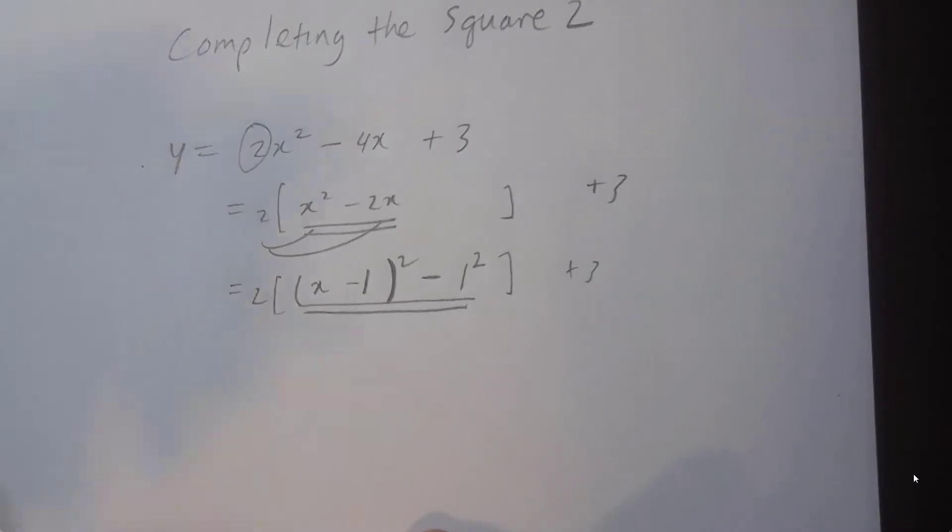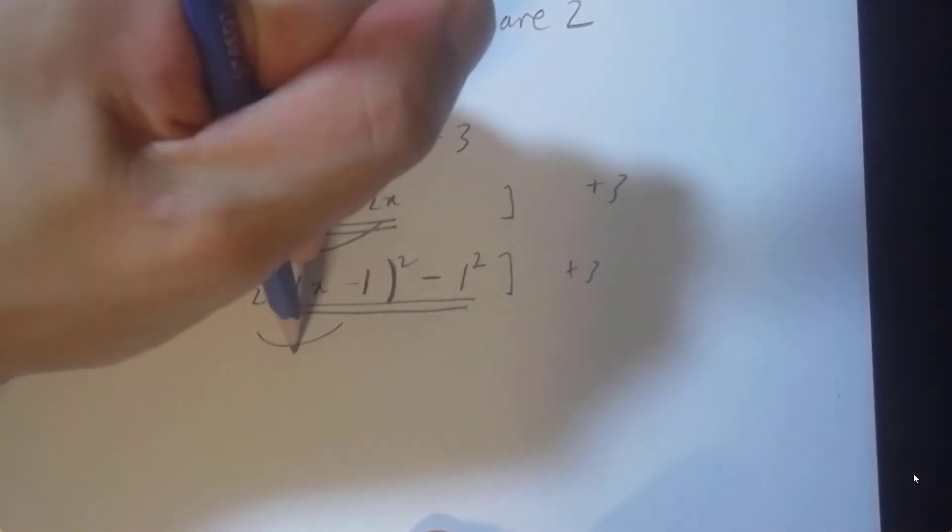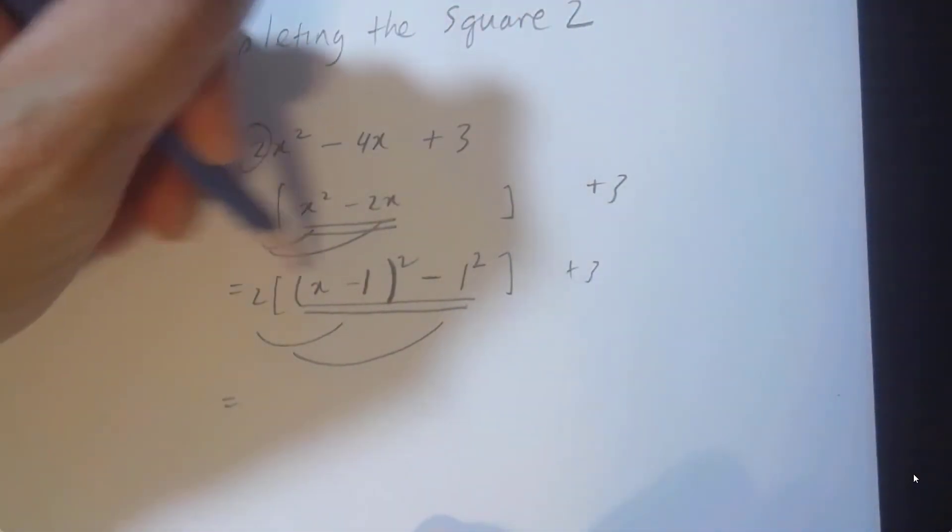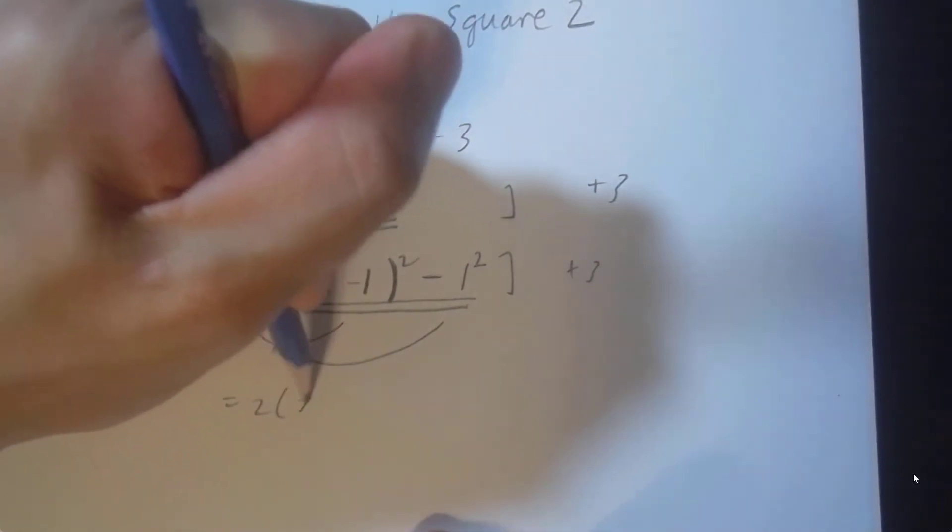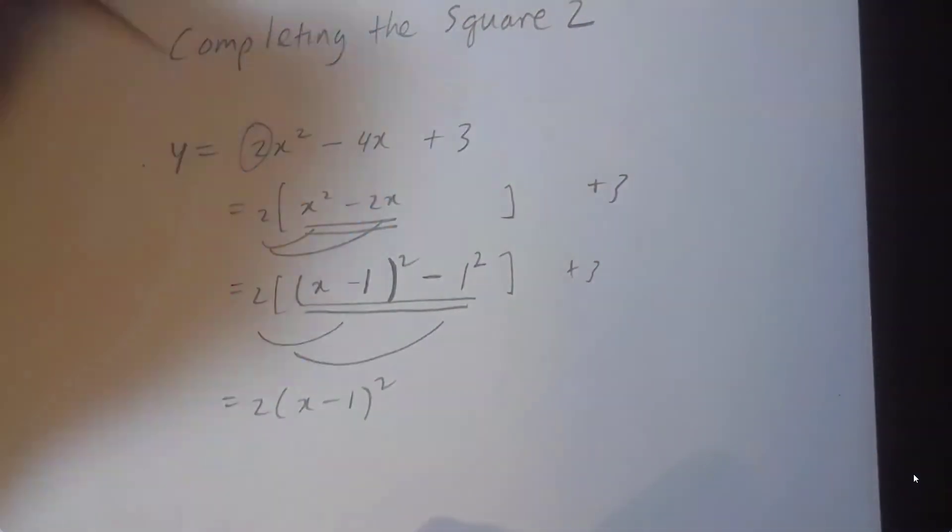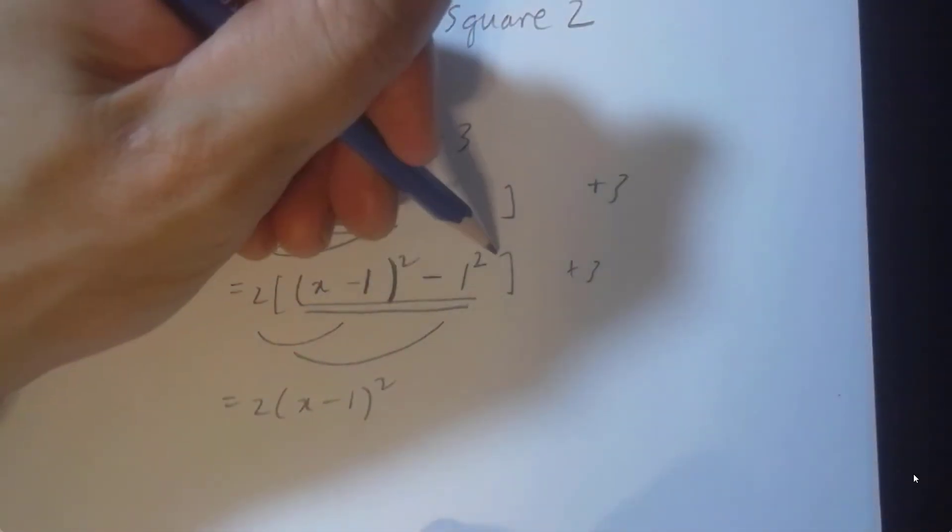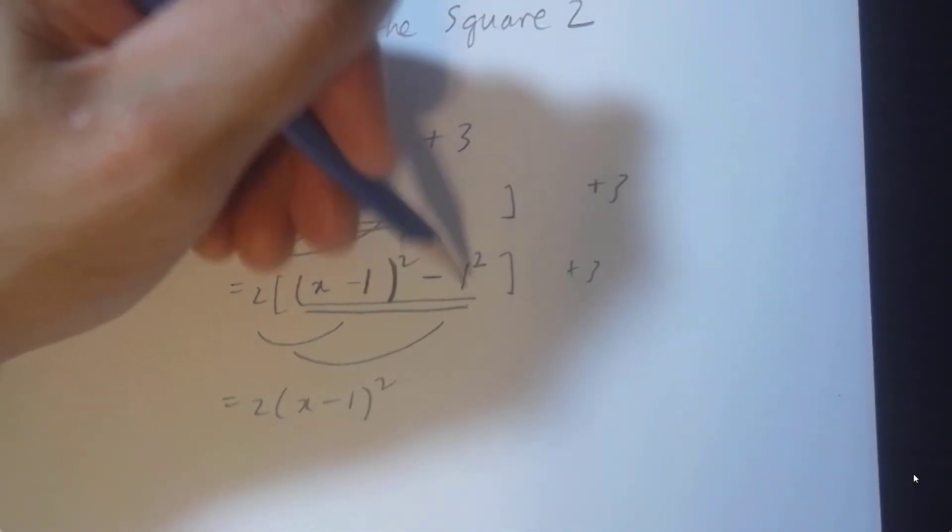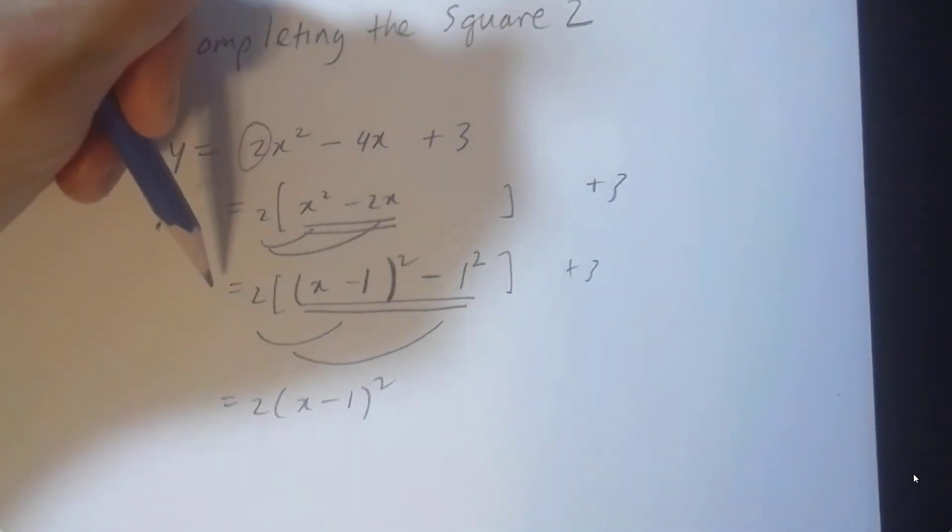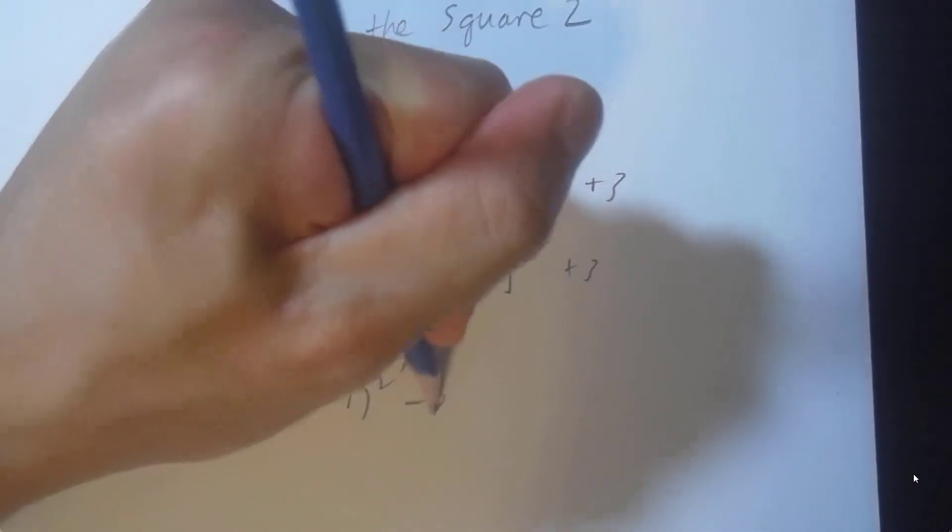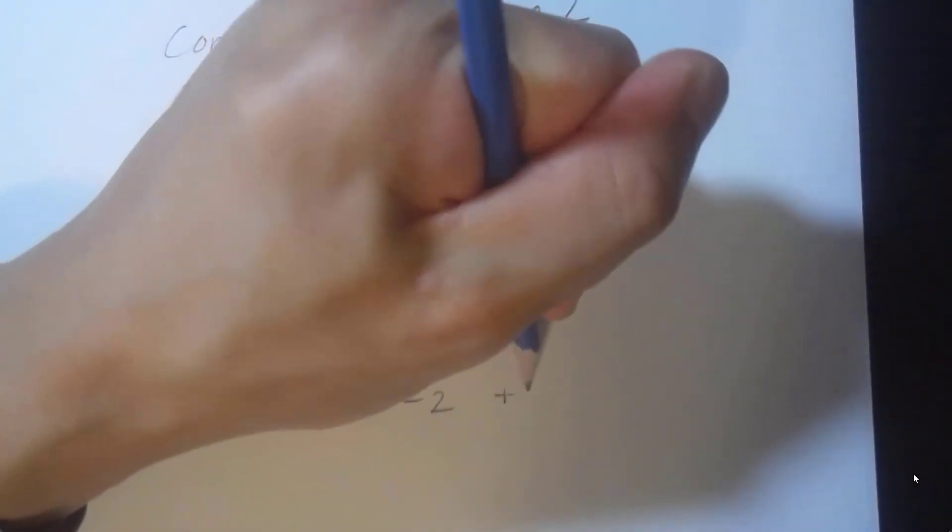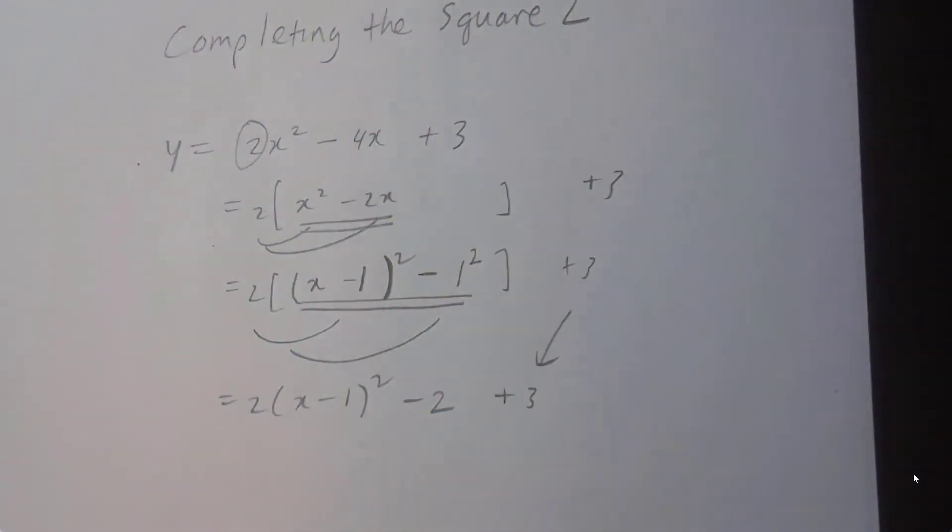Now we're going to distribute. 2 times this becomes 2 times this. And then 2 times that, this happens to be just 1. 1 squared is 1. 2 times negative 1 is negative 2. And the plus 3 just comes down.